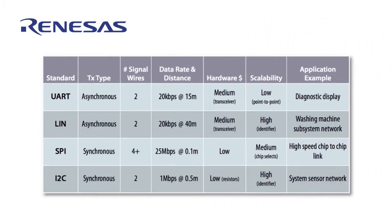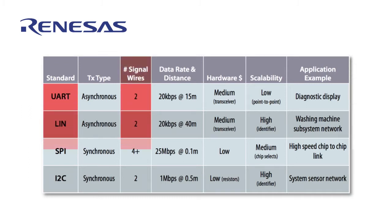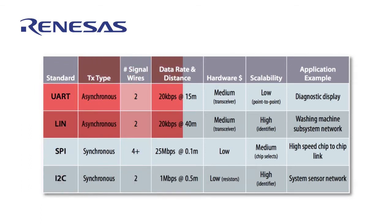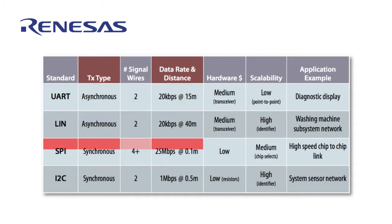Let's begin with a quick review. One nice thing about these simpler standards is that they don't require a lot of signal wires. UART, LIN, and I2C use only two wires, and SPI uses four wires. UART and LIN are based on asynchronous transmission, which makes them work well over longer distances and therefore are a good choice for off-the-board communications. Using clock synchronous transmission, SPI and I2C offer higher data rates over shorter distances, making them a good alternative for on-the-board communications.